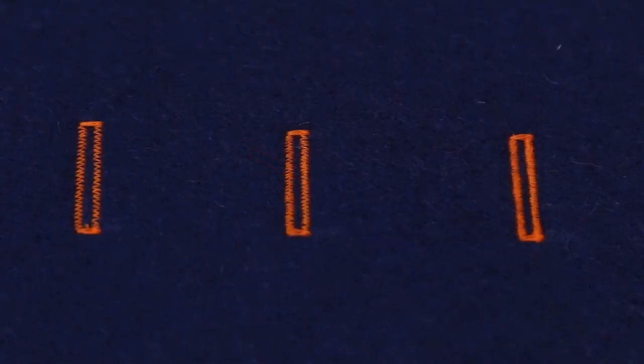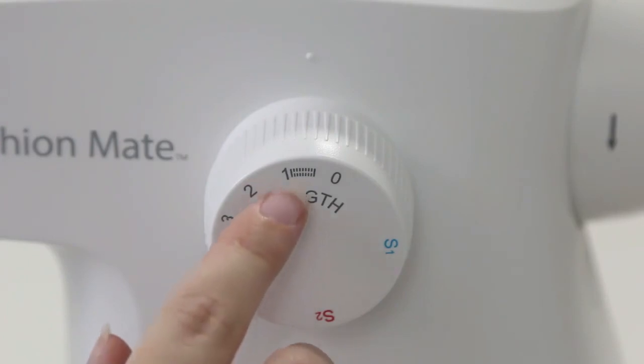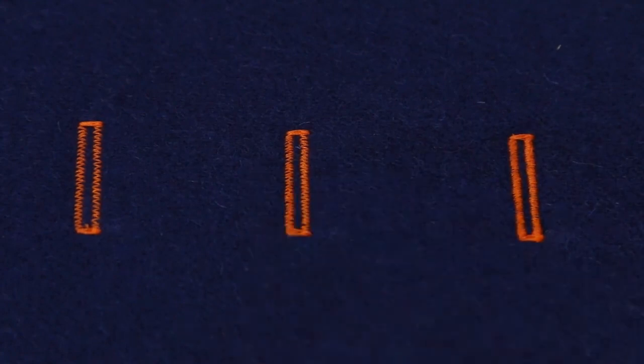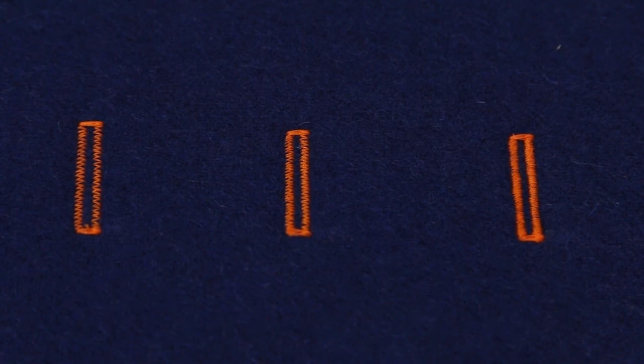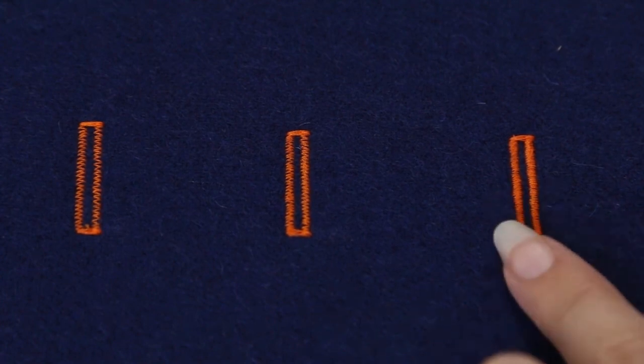To make your stitches further apart on your buttonhole, you want to be on the left side of this buttonhole icon on your stitch length dial. In the middle of the icon, they start to get closer together. And when you are on the right of that buttonhole icon on your stitch length dial, your stitches are very close together.